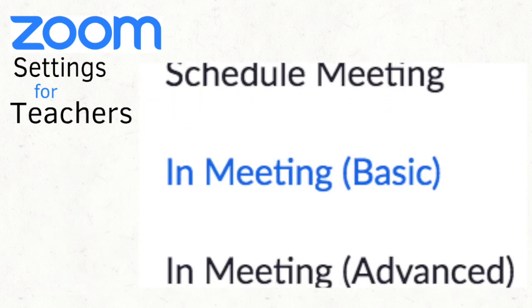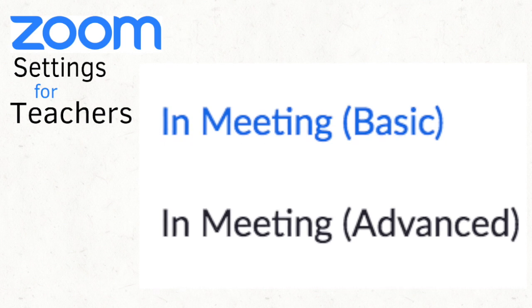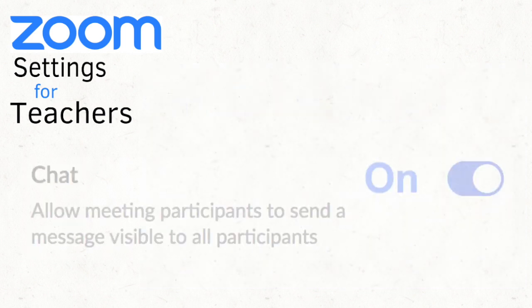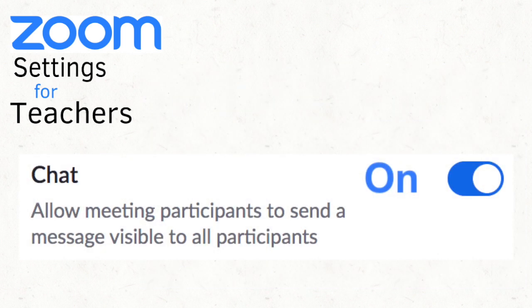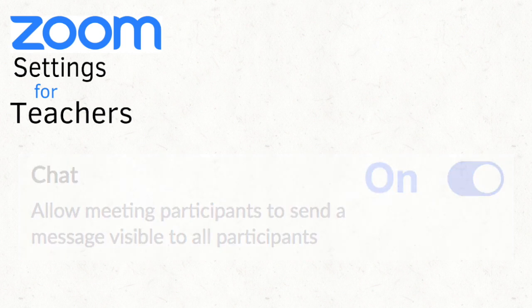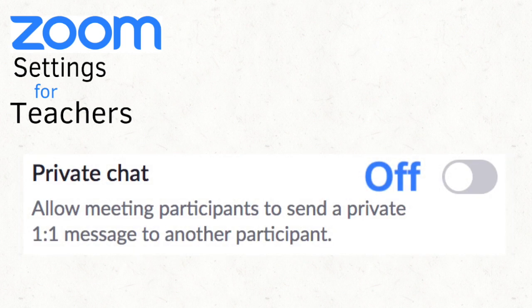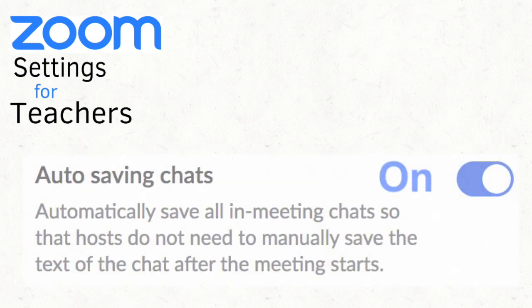This takes us to the Zoom Meetings In Meeting Basic Settings. Turn on the Chat setting. This allows the students to send messages that are visible to the teacher and all other students. Turn off Private Chat — don't allow students to send one-to-one messages to another student. Select Auto-Saving Chats. This way, all the chats are saved automatically and the teacher can go back and review the chats from that Zoom meeting session.